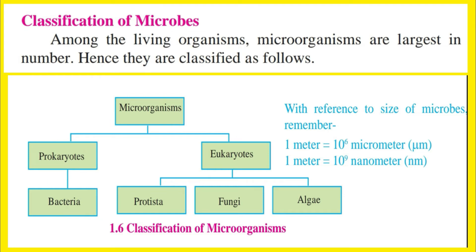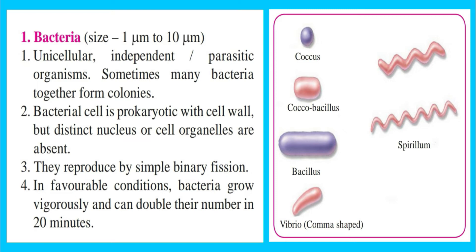Classification of Microbes. Among living organisms, microorganisms are largest in number, hence they are classified as follows. 1. Bacteria — size: 1 micrometer to 10 micrometers. Characteristics: 1. Unicellular, independent or parasitic organisms; sometimes many bacteria together form colonies. 2. Bacterial cell is prokaryotic with a cell wall, but a distinct nucleus or cell organelles are absent. 3. They reproduce by binary fission. 4. In favourable conditions, bacteria grow vigorously and can double their number in 20 minutes.